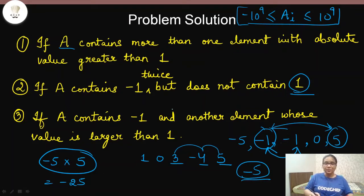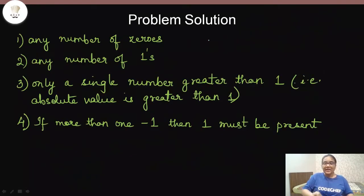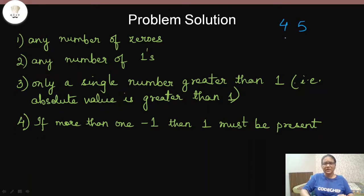After discussing what makes an array invalid, let's see what values an array can have to be considered closed under multiplication. The array can have any number of zeros — any number multiplied by zero always gives zero. It can have any number of ones — that's also fine. The array can only have a single number with absolute value greater than one, because multiplying two such numbers like 4×5 gives 20, which won't be present in the array.